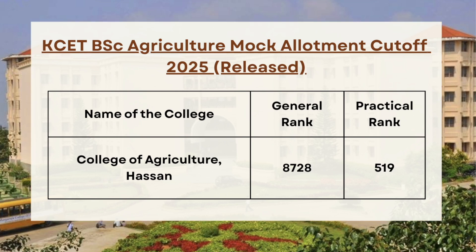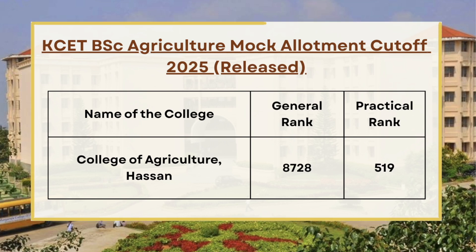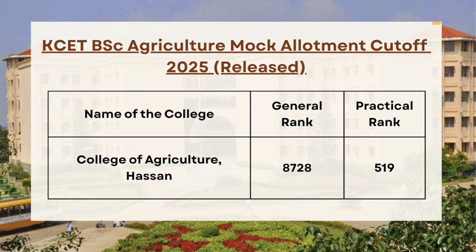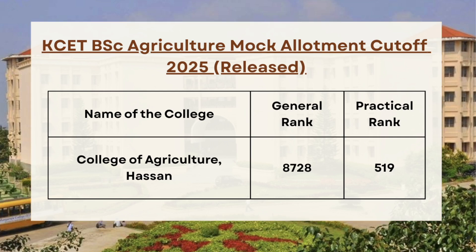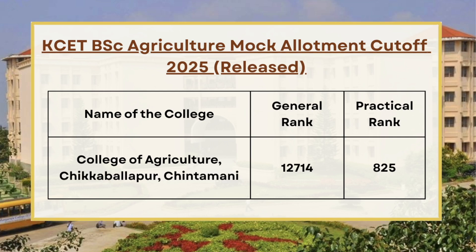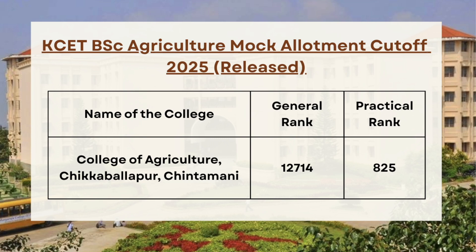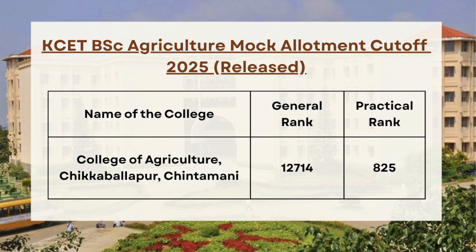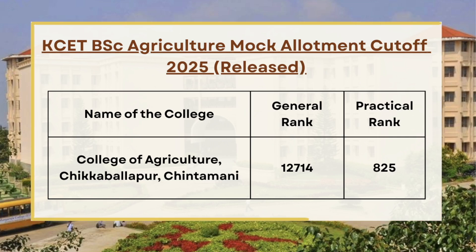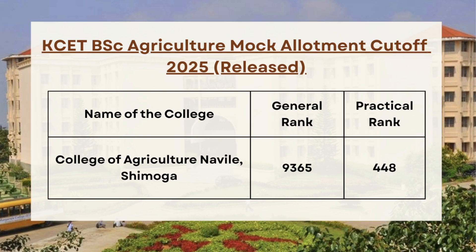Next we have College of Agriculture Hassan, so for general category the cutoff is 8728 and for practical category the cutoff is 590. Next we have College of Agriculture Chintamani, so for general we have 12714 and for practical we have 825.